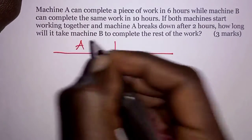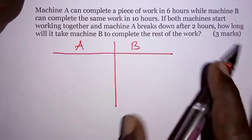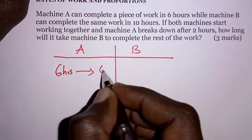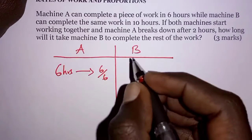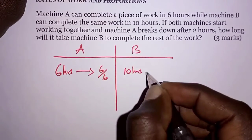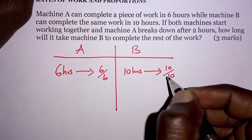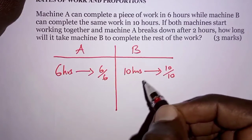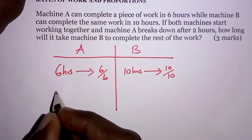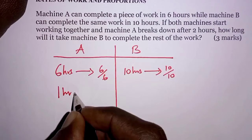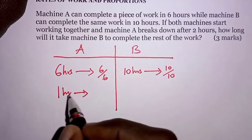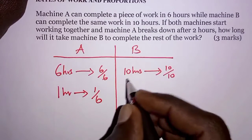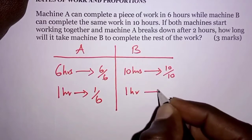We have two machines, Machine A and Machine B. Machine A takes 6 hours to complete the piece of work — that is 6/6 of the work — while Machine B takes 10 hours, that is 10/10 of the work. Our target is to find the fraction each machine does in one hour. For Machine A, in one hour it does 1/6. For Machine B, in one hour it does 1/10 of the work.